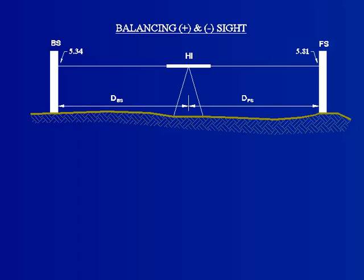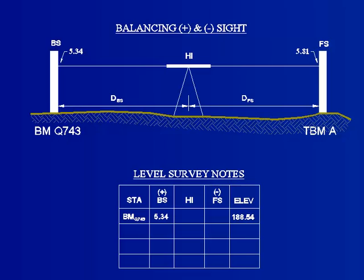Now, let's try a level survey instrument set up between a known benchmark and a temporary point A. Here, a back sight is taken to an established benchmark, BMQ743, and foresight taken to a temporary benchmark, TBMA.